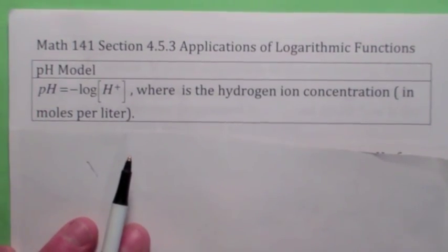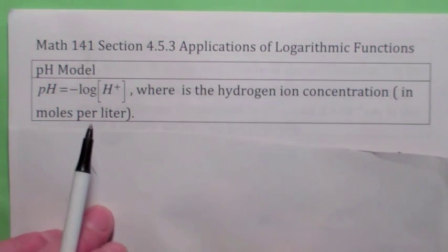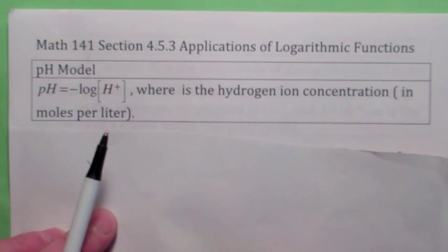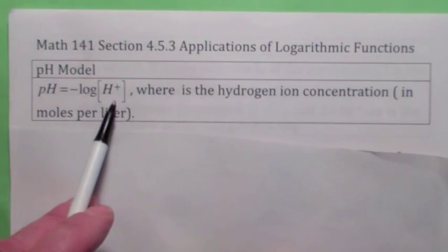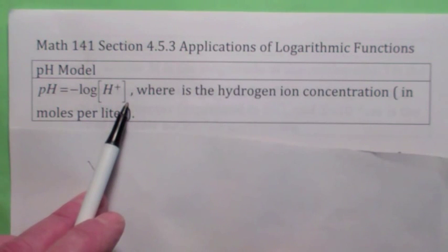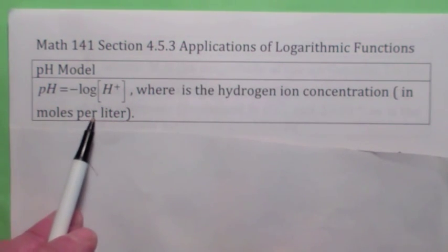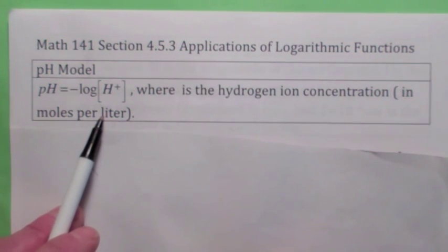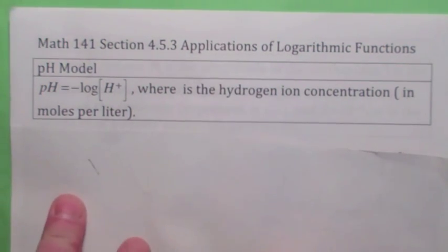In this first example, let's look at the pH scale. That's a measure of how acidic a substance is. The greater the hydrogen ion concentration, the closer the pH is to 0. And the smaller the hydrogen ion concentration is, the less acidic — the more basic it is. It generally varies from 0 to 14, although it's possible to have a negative pH. And 7 is considered neutral.